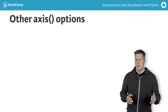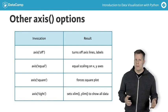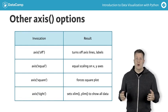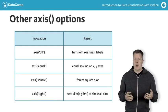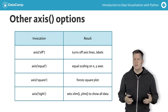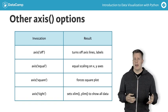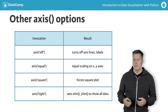The axis command accepts other strings and parameters as well. These include 'off' to stop the axes from being drawn, 'equal' to force identical scaling of X and Y axes, and more.